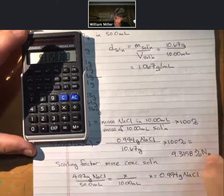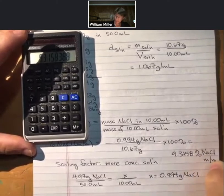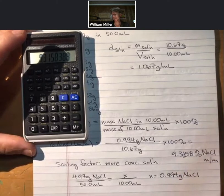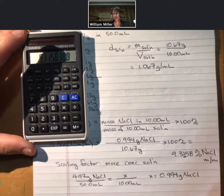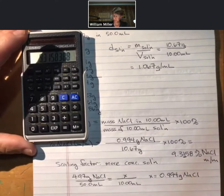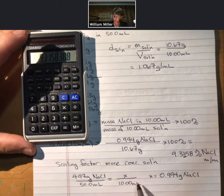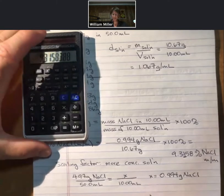Percent sodium chloride mass by mass. And then that only has 3 sig figs, so once I get through my averaging, I'll end up carrying that through to get my 3 sig figs. So that's how you do a scaling factor for the more concentrated solution.